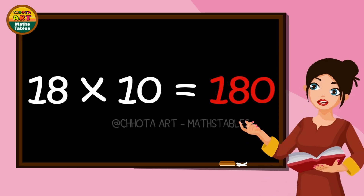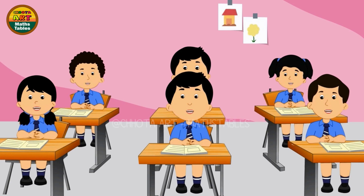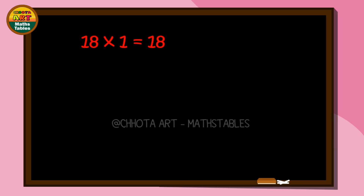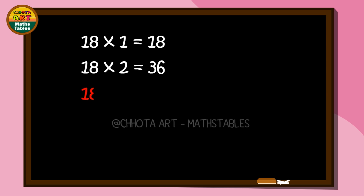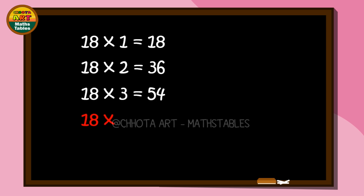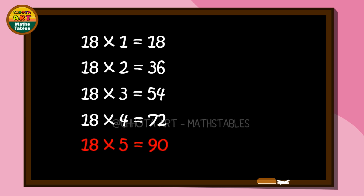18 tens are 180. 18 ones are 18, 18 twos are 36, 18 threes are 54, 18 fours are 72, 18 fives are 90.